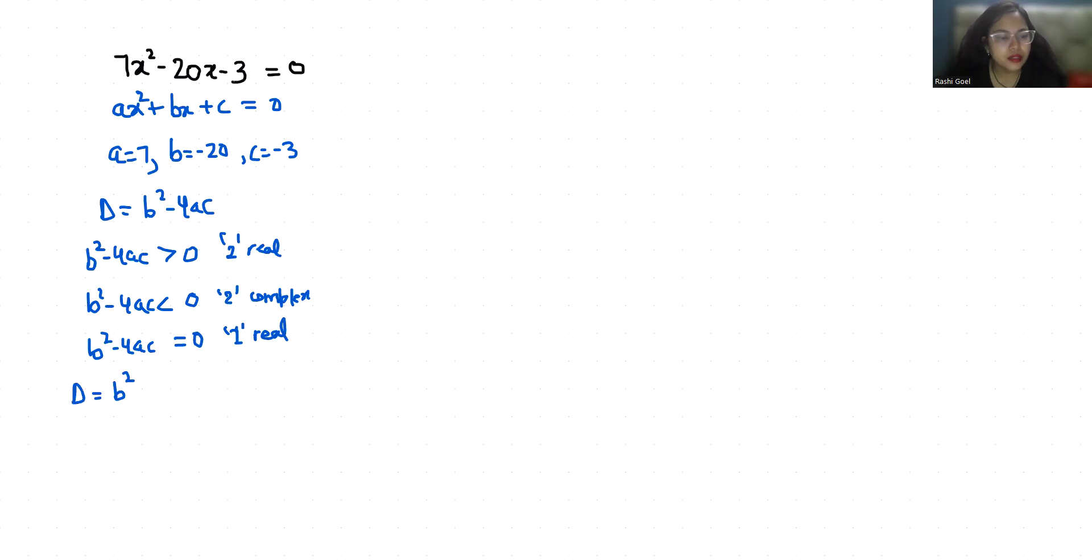The value of b is minus 20 square minus 4 times a, 7, times minus 3. Minus 20 square is 400, minus minus is plus, 4 times 7 times 3 is 84, so it becomes 484, which is positive, greater than zero, so two real solutions exist.